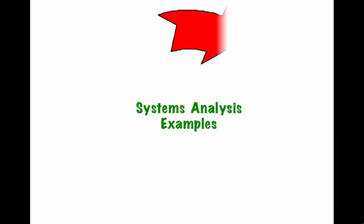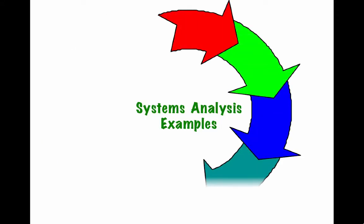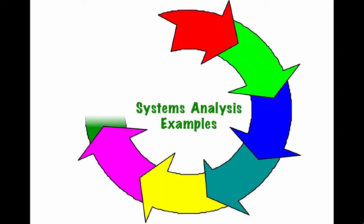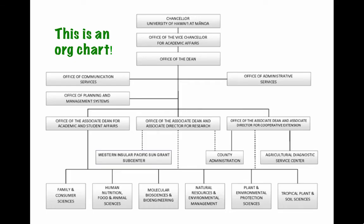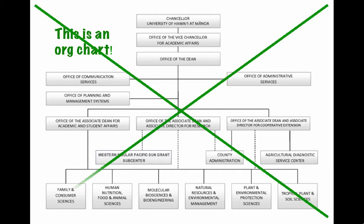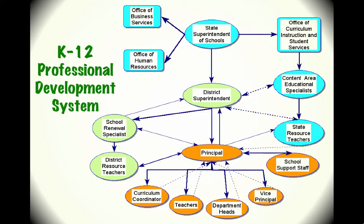Now I'm going to show you some examples of systems analysis. This is an organizational chart — notice its top-down hierarchical nature, and notice there are no arrows, so it doesn't really tell you which direction it flows. This is not a systems analysis. Here is a systems analysis example of a K-12 professional development system.